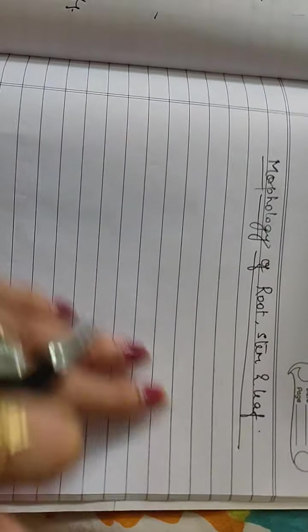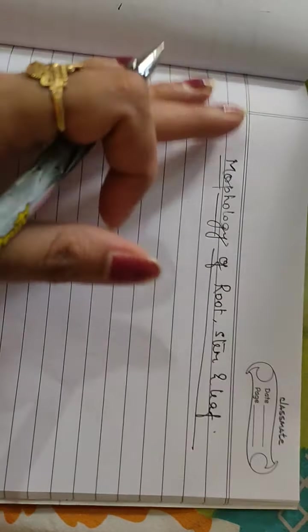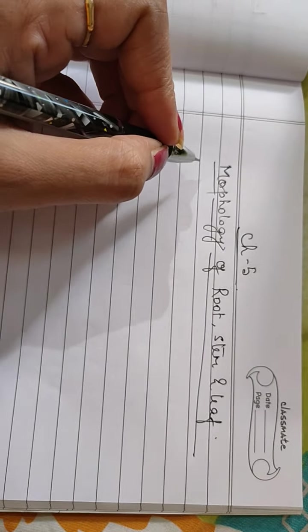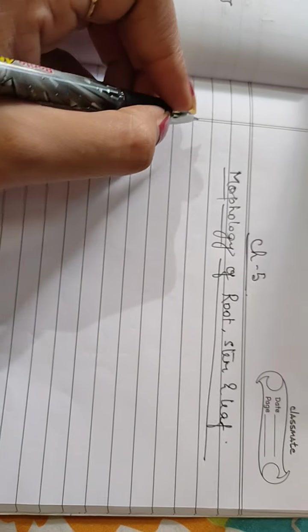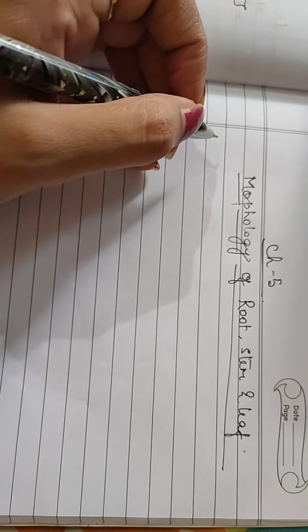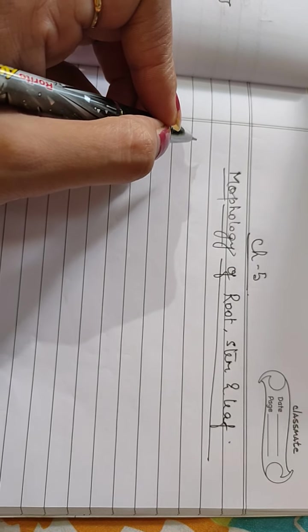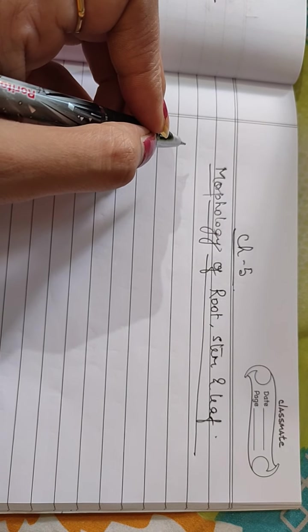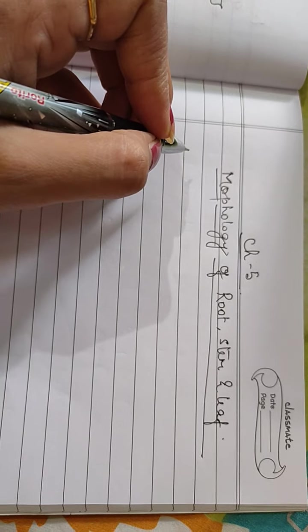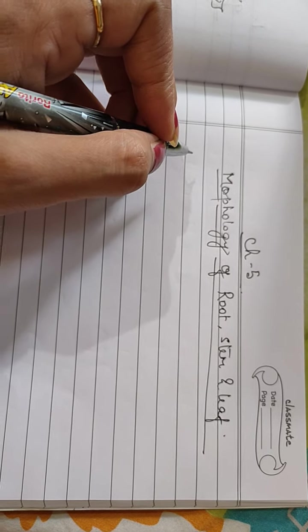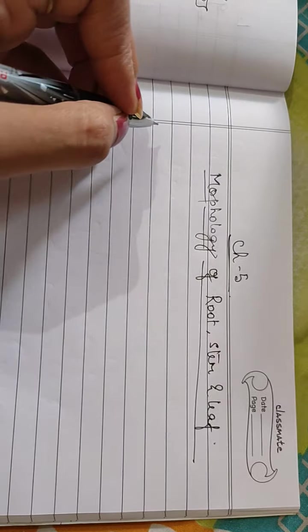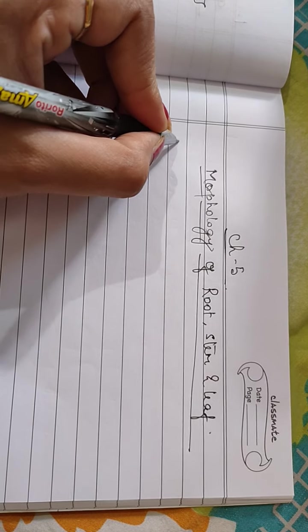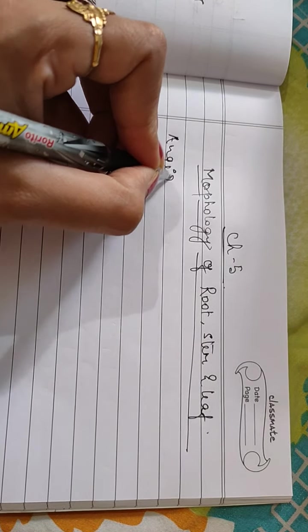Hello students, this is your new chapter — Chapter 5, that is Morphology of Root, Stem and Leaf. In plant kingdom during Chapter 3 you also saw the characteristics of plants, but in this chapter you will go through detail about the morphology of root, stem and leaf. In this chapter we will especially talk about the angiospermic plant only.